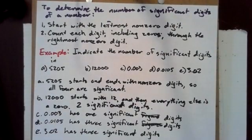To determine the number of significant digits of a number: first, start with the leftmost non-zero digit; second, count each digit, including zeros, through the rightmost non-zero digit.